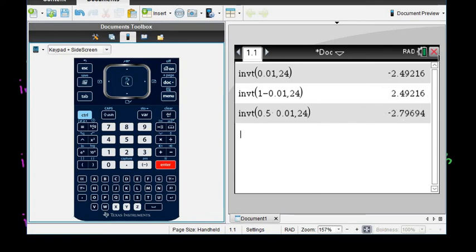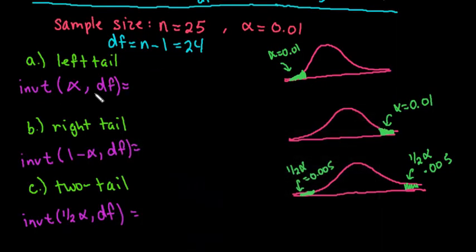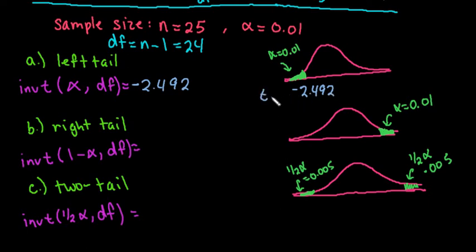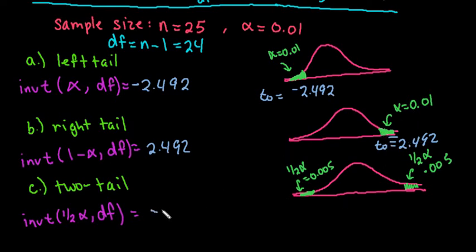We write down both the positive and negative of this value. For a left tail, the inverse T with alpha and degrees of freedom 24 gives us negative 2.492. For the right tail we write down the positive value 2.492, since anything more extreme would be unusual and we would reject it. For the two-tail we write down both values: negative 2.797 and positive 2.797. Hopefully you can use your Inspire to find your rejection region values. Thanks for watching!